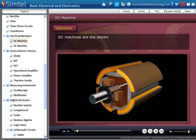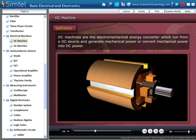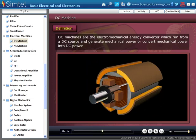DC machines are electromechanical energy converters which run from a DC source and generate mechanical power, or convert mechanical power into DC power.